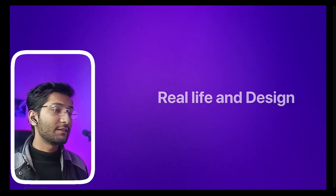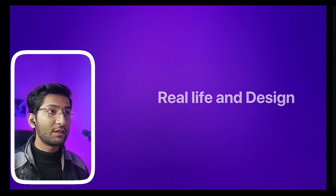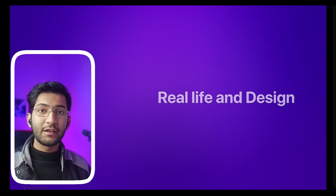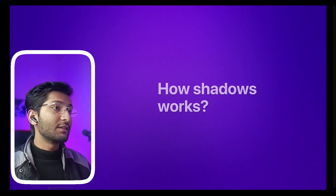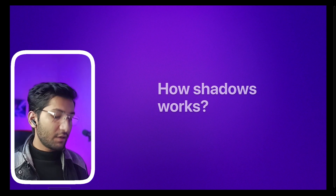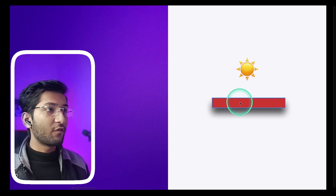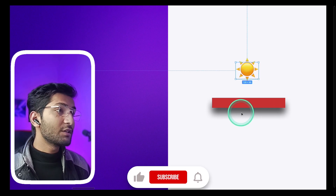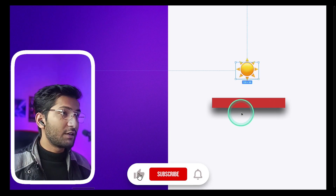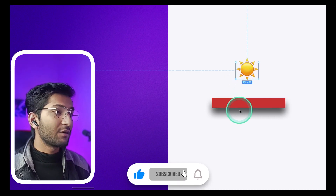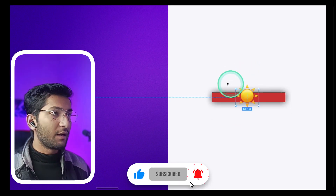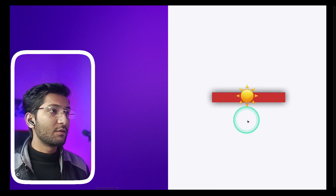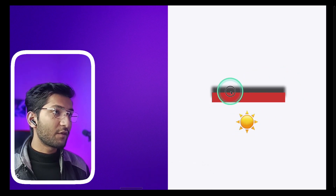If we just look at the real world and design, there are so many similarities. The majority of design things are picked from the real world, and shadows are one of them. Let's see how shadows work in the real world. If you have a wall or object and there is a sun, the shadow will be in the opposite direction. If the sun is just above, then the shadow is around, and if the sun is behind, the shadow is in the front direction.